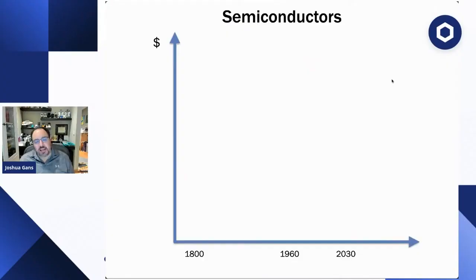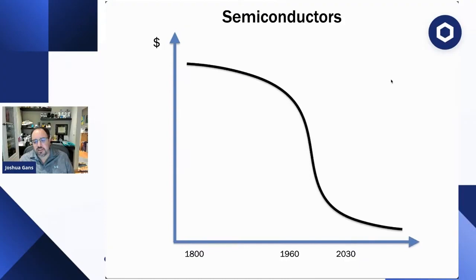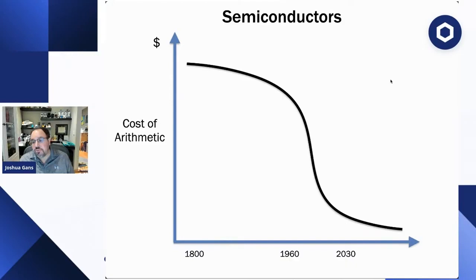The way economists look at any new technology is they look at its progression over time and try to reduce that technology to a reduction in the cost of something. With semiconductors, you have a curve showing the reduction in cost, and what's on the y-axis is the cost of arithmetic. What semiconductors have been able to do is dramatically reduce the cost of arithmetic — and that's all that computers really do.